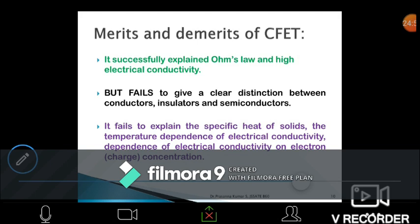Coming to the merits and demerits of classical free electron theory—the merits are that it successfully explained Ohm's law and high electrical conductivity. It explains why metals are high electrical conductors.